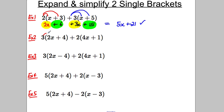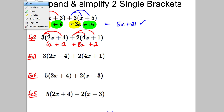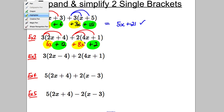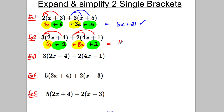Same thing with example 2. 3 multiplied by 2x is 6x. 3 multiplied by positive 4 is positive 12. Positive 2 multiplied by 4x is positive 8x. Positive 2 multiplied by positive 1 is positive 2. Collect like terms: positive 6x and positive 8x; positive 12 and positive 2. So in total, 6x add 8x is 14x, and 12 add 2 is 14.